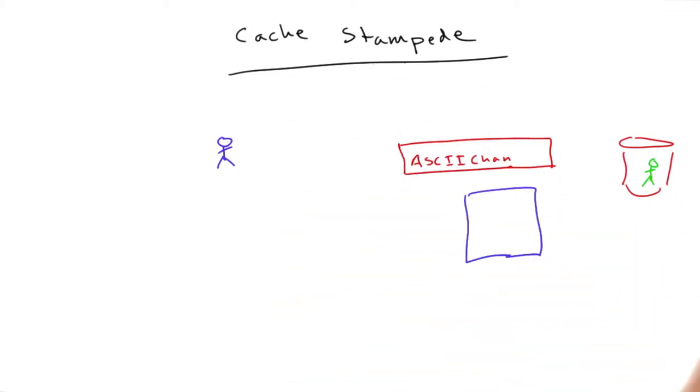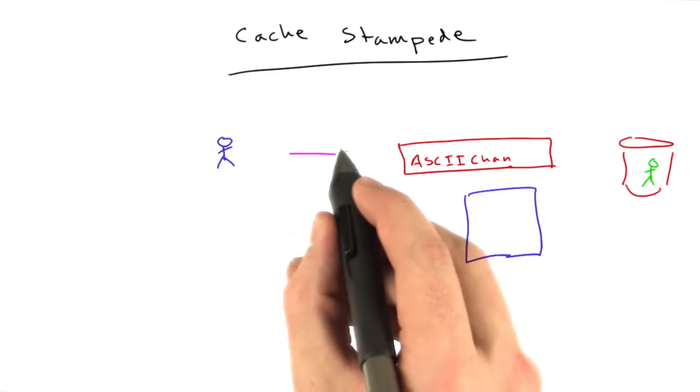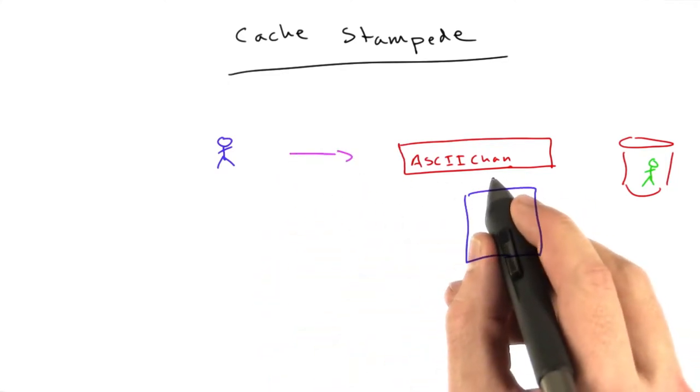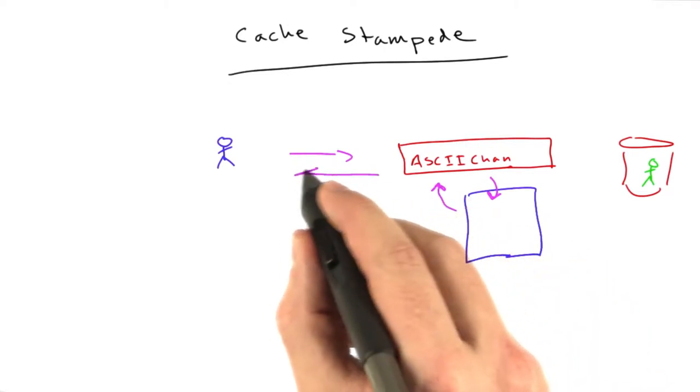Okay, so I'd like to talk about a new concept called a cache stampede. We've got our use case now. A user makes a request, and the request probably bounces off our cache and returns.